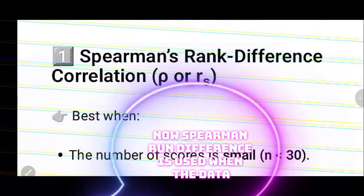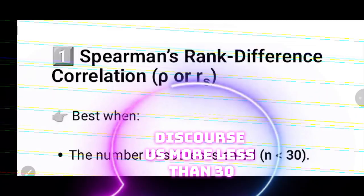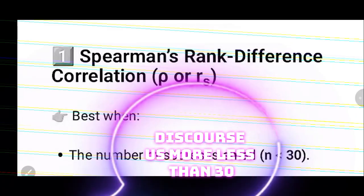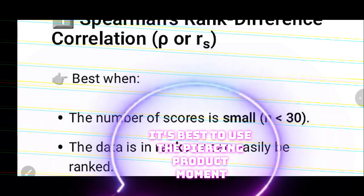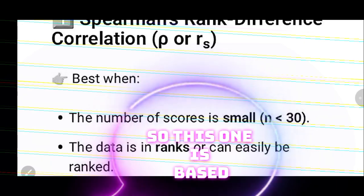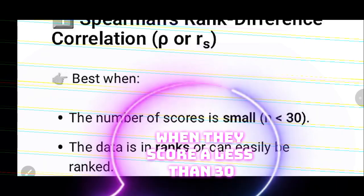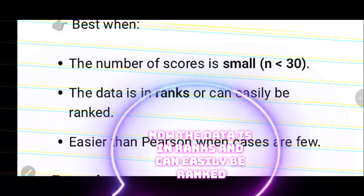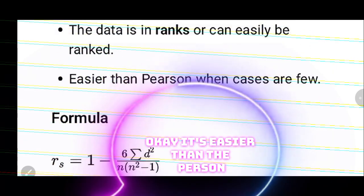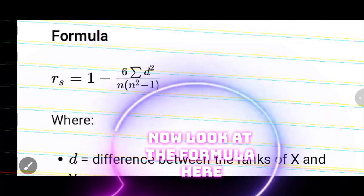Spearman rank difference is used when the data size is less than 30. If it is more than 30, it is better to use the Pearson product moment. This method works when scores are ranked and can easily be ranked — it is easier than the Pearson.